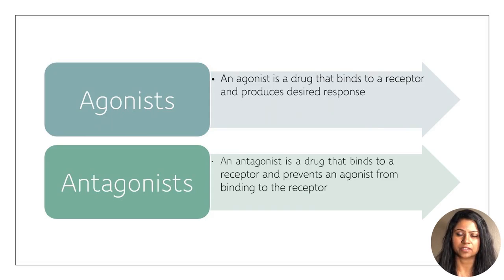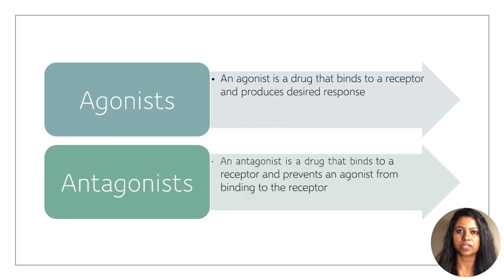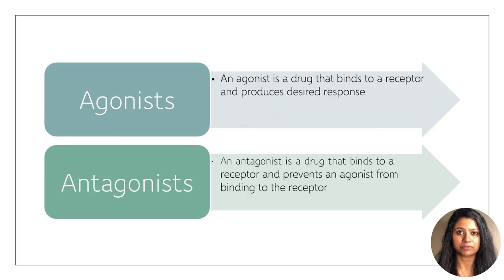Let's begin with agonists. Agonists, also called full agonists, are drugs which bind to a receptor and then produce the maximum response, or the desired response. An example is epinephrine. When epinephrine binds to the beta-1 receptor, it produces the desired response, which is an increase in heart rate.